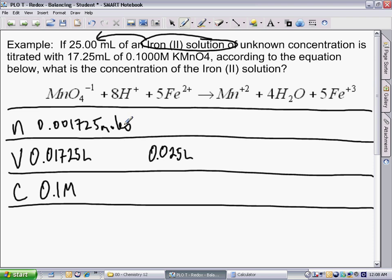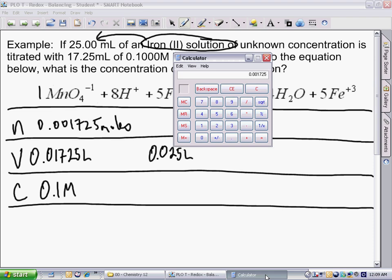The stoichiometric ratio of MnO4- to Fe2+ is 1 to 5. So, to convert, to go from how much of MnO4- we're going to use up, we multiply by 5 and divide by 1. So, 0.001725 times 5 equals 0.008625.